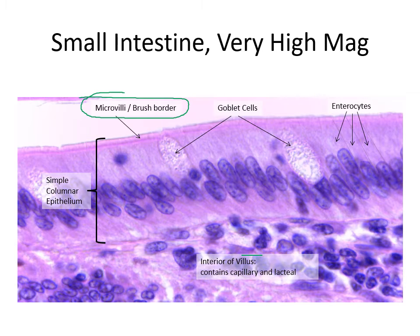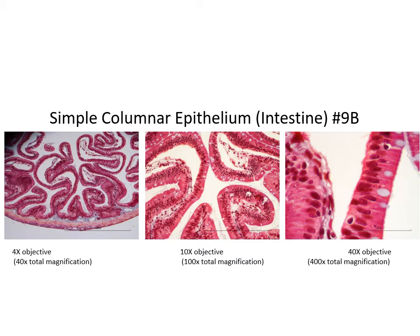Again, on the inside of the villus that's where we're going to find the capillary and the lacteal — which is where those nutrients, when they move into the cell, are going to move across and then into either the capillary or the lacteal. Here's another image from our lab of simple columnar epithelium from the small intestine. On this high power view you can see the microvilli on the tops of each cell, and here's another example of a goblet cell.